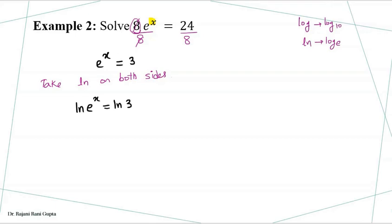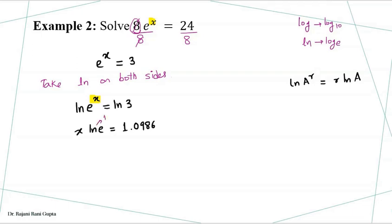Taking ln on both sides gives us: ln of e to the power x equals ln of 3. Using the same rule — ln of a to the power r equals r times ln of a — the x comes down: x times ln of e equals ln of 3. Using a calculator, ln of 3 comes out to 1.0986. Since ln of e equals 1, we get directly x equals 1.0986.